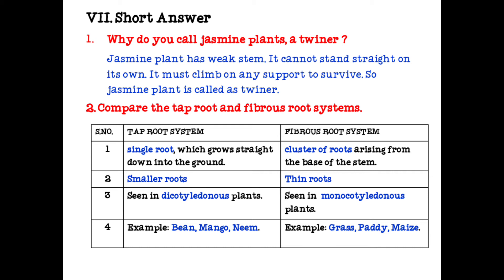Examples of tap root system are bean, mango, and neem. Examples of fibrous root system are grass, paddy, maize, etc.